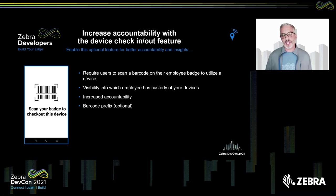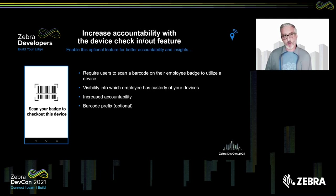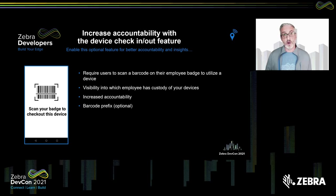This increases accountability because the associate realizes they're being tracked and will be more inclined to ensure the device returns to the cradle at the end of the day. Having that feature alone helps reduce devices from being misplaced. More importantly, if a device is misplaced, whoever is looking for it can see who used the device last. If they knew that John was using the device last and he works in the frozen food aisle, they can go look for John or ask co-workers. This is a great optional feature — you don't have to use it, but it definitely improves the main goal of making sure your devices are being used and not misplaced.